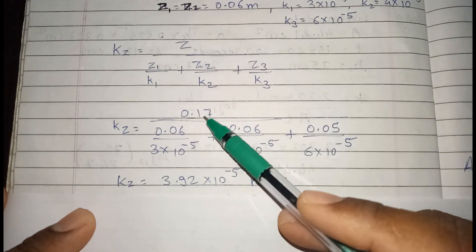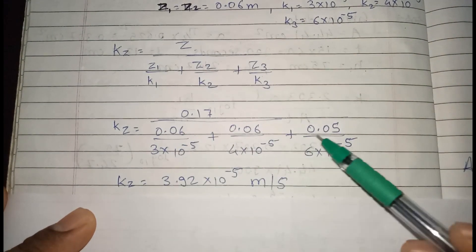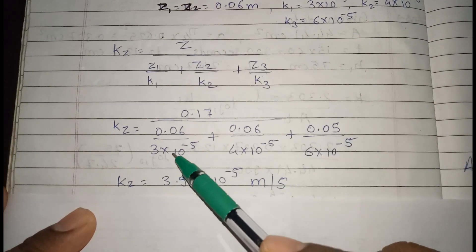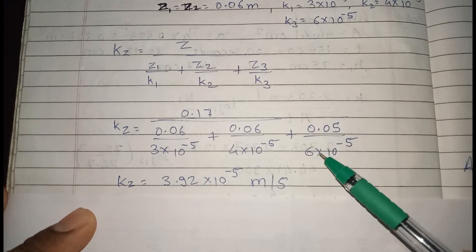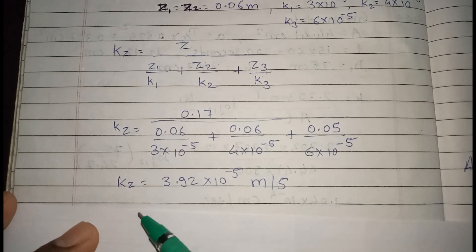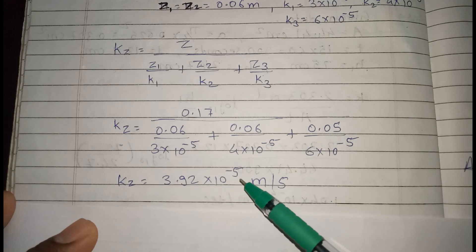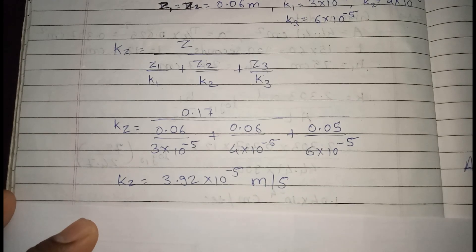We know that total Z is 0.17, Z1 is 0.06, Z2 also 0.06, Z3 is 0.05, and all these permeabilities, coefficient of permeabilities for 3 layers. And this is the average permeability is 3.92 into 10 raise to minus 5 meter per second.